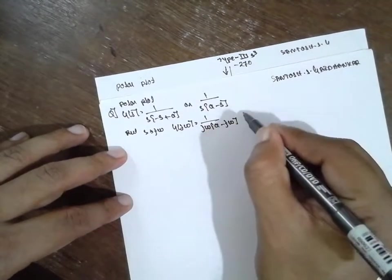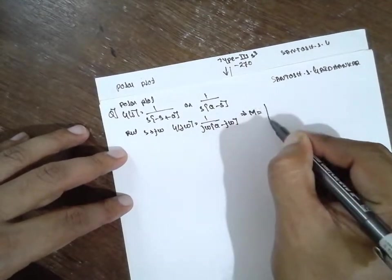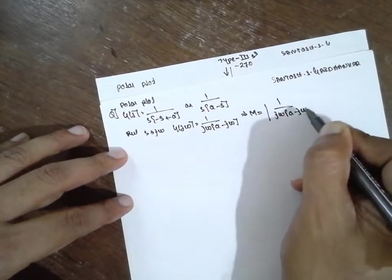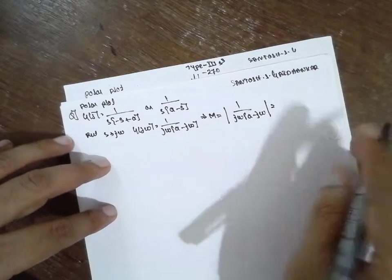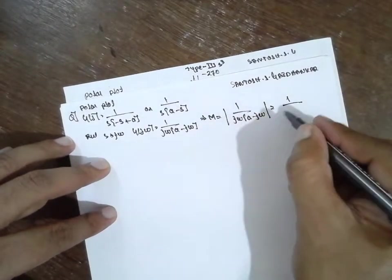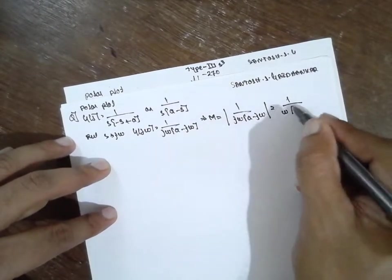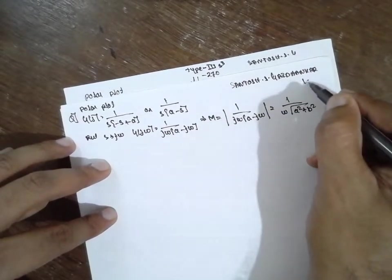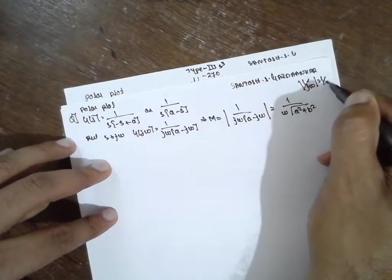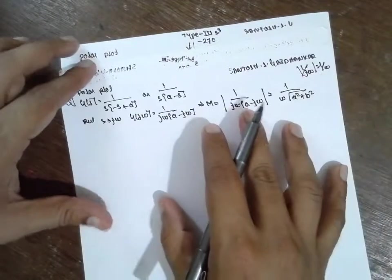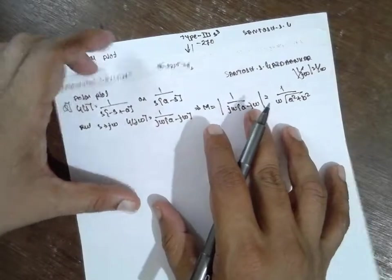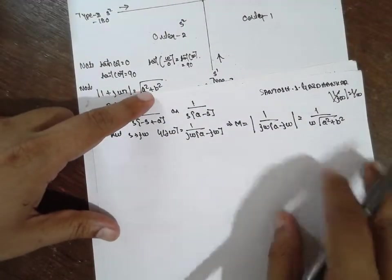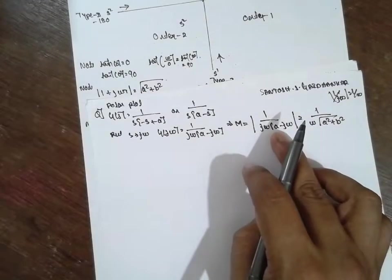Go for magnitude. Finding the magnitude: the numerator magnitude of 1 is 1, divided by magnitude of jω(a minus jω), which is ω times root(a² plus ω²). The magnitude of 1 plus jωT form is root(a² plus b²). If it is minus, it also becomes plus.